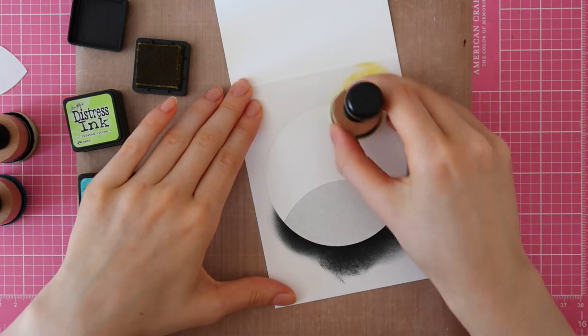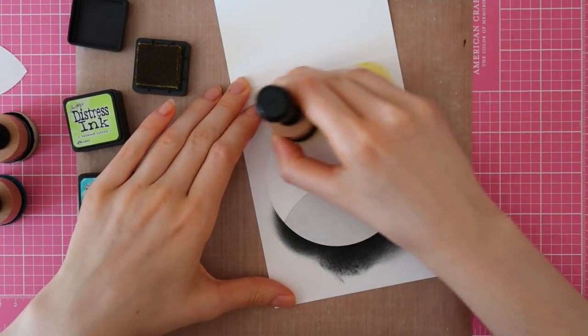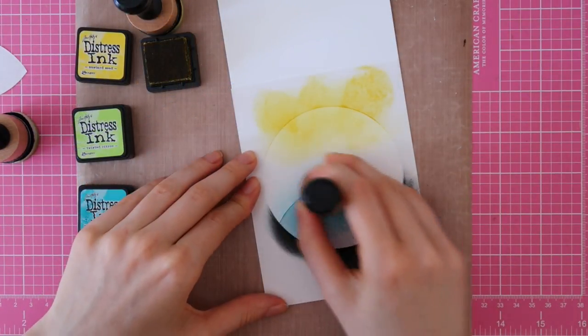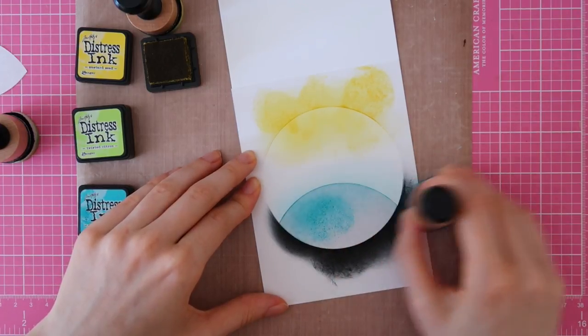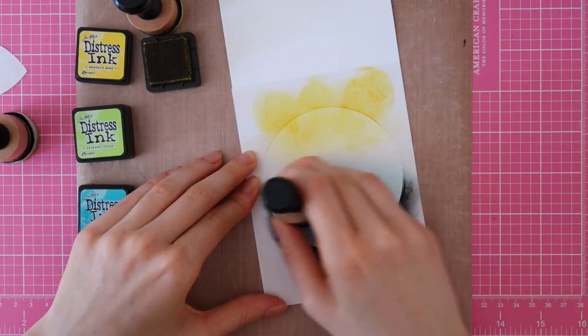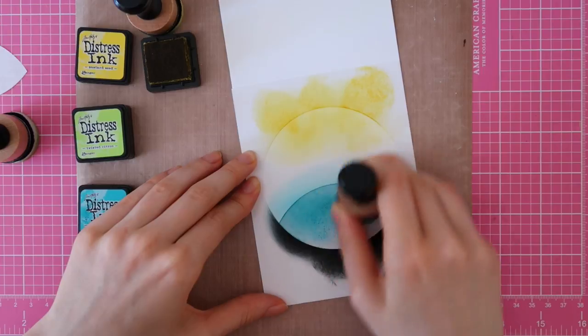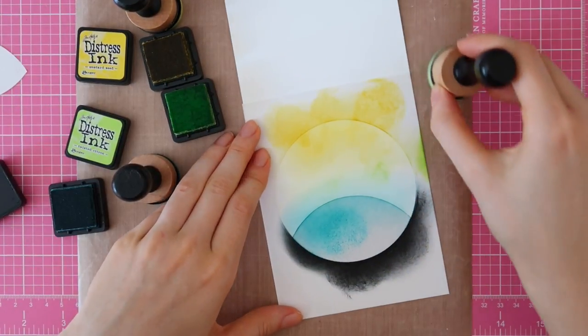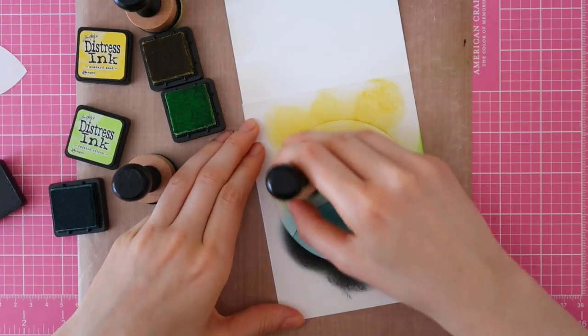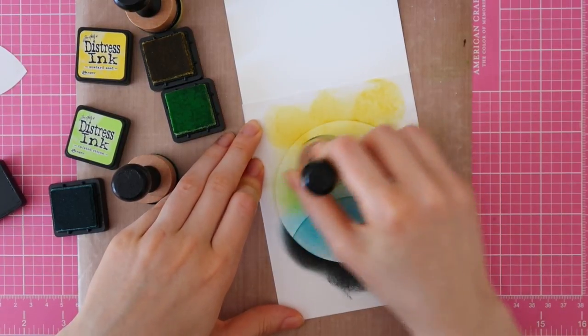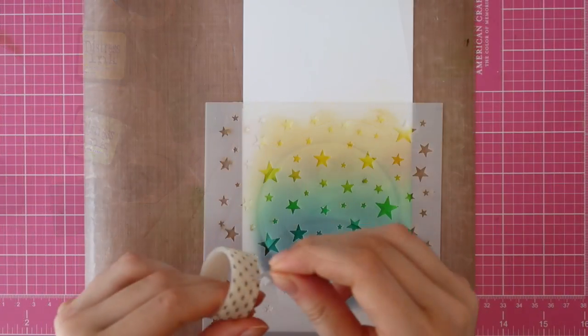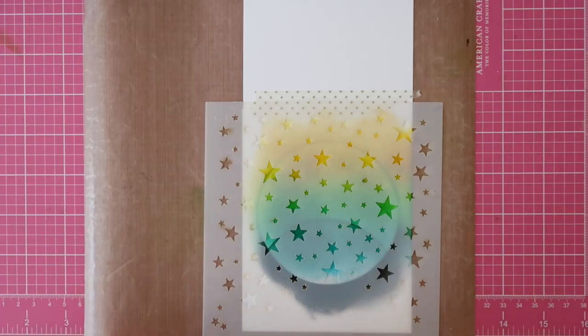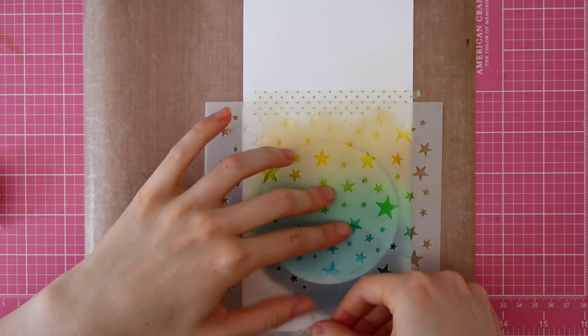I'm using three different Distress Inks today: Mustard Seed, Twisted Citron and Peacock Feathers. I'm just going to do a lot of ink blending. I repeated this step about five or six times - just blend away until you're happy with the result. I started out with the yellow color on the top, then I started blending the Peacock Feathers on the bottom. And then in the center, I'm using Twisted Citron to blend all of these colors together. Sometimes there are some colors that blend easier than others. In this case, I had a little bit of trouble blending the Twisted Citron, but in the end it all worked out.